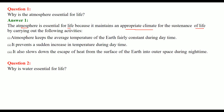The atmosphere keeps the average temperature of the earth fairly constant during the daytime, and it prevents sudden decrease or sudden increase in temperature during the daytime and nighttime. It also slows down the escape of heat from the surface of the earth into outer space during nighttime.